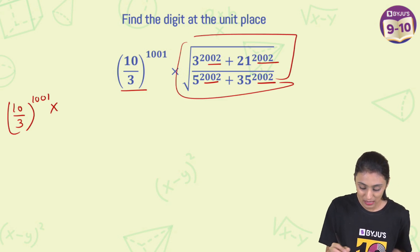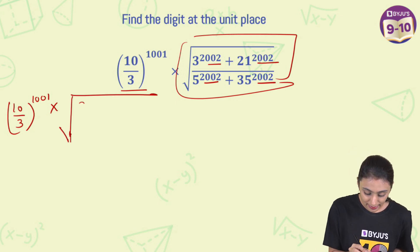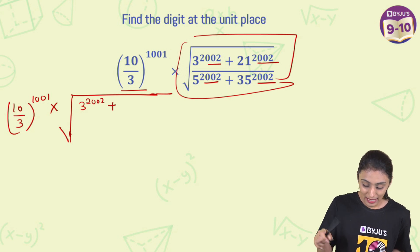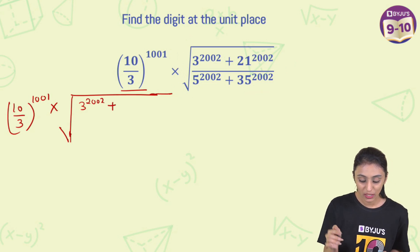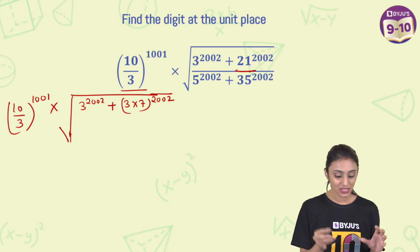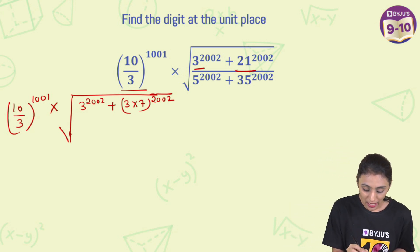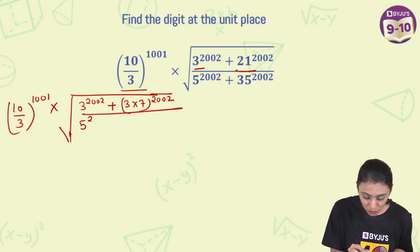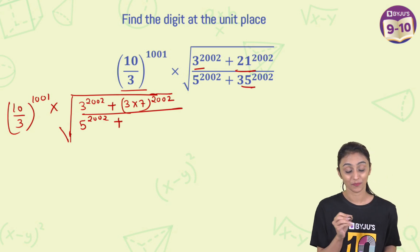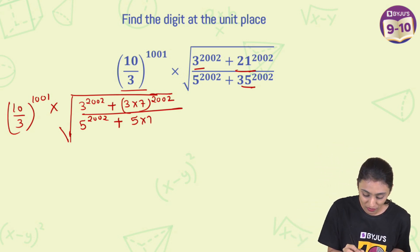Let's first simplify the expression inside the square root. In the numerator we have 3 to the power 2002 plus 21 to the power 2002. Now 21 can be written as 3 times 7, so this becomes 3 times 7 to the power 2002. We do this because we can see 3 appearing, so we're trying to build a relationship. In the denominator we have 5 to the power 2002 plus 35 to the power 2002, and 35 can be split as 5 times 7, so that becomes 5 times 7 to the power 2002.